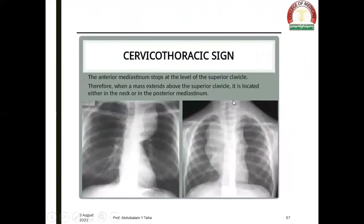In this example, we have a large opacity in the upper chest. The upper limit of the opacity is below the level of the clavicle. Therefore the lesion is located anteriorly — and that is the value of the cervicothoracic sign.